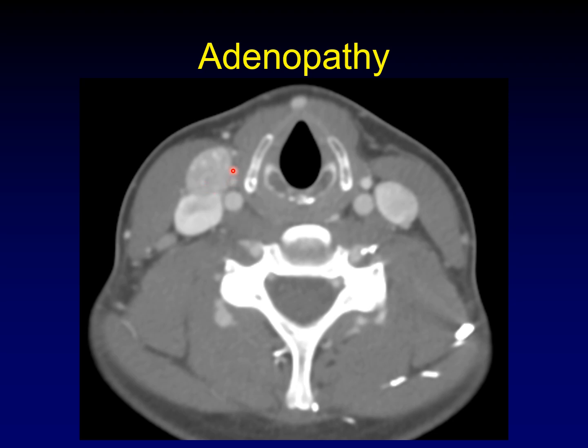Sometimes metastatic nodes are not cystic. Here's a metastatic node where you can see those fine speckled calcifications we were discussing within the primary tumor — sometimes they'll appear within the nodes as well.